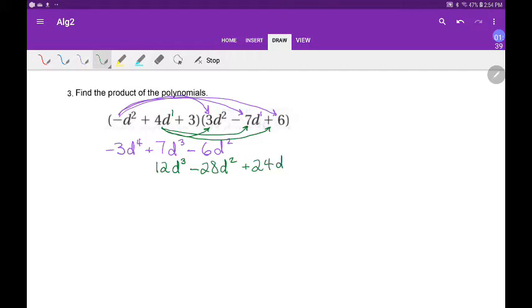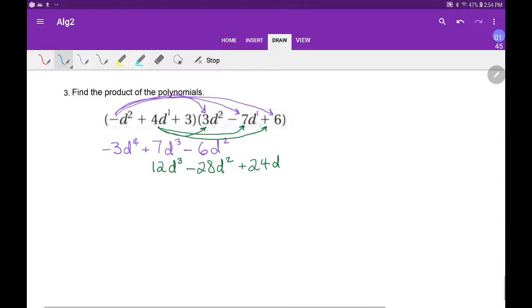Finally, it's going to be hard to make this look right, so hopefully you can keep track without me drawing arrows. 3 times 3 is 9d squared. 3 times negative 7 is negative 21d. Then 3 times 6—there's no d involved at all—it's just 18.